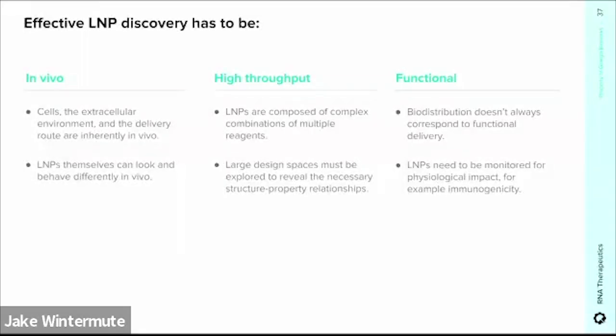LNP design is an inherently in vivo problem — both the cells and LNPs themselves look and behave differently in vivo, so there's really no good substitute for in vivo work. Second, LNP screening needs to be done in high throughput because LNPs are complicated and represent such a large design space. Third, LNPs require functional characterization that's often technically challenging: the spatial location of an LNP where it gets delivered doesn't necessarily mean that the payload is functional. We need to confirm functionality, and we also need complex assays to check other physiological effects such as immunogenicity.